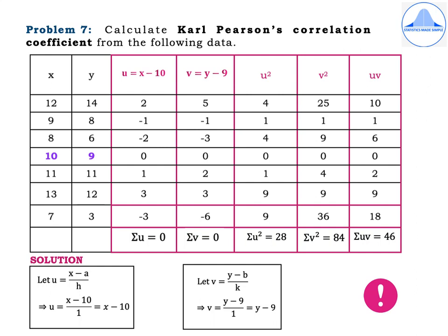Problem 7: Calculate Carl Pearson's correlation coefficient from the following data. The x values are 12, 9, 8, 10, 11, 13, and 7. The y values are 14, 8, 6, 9, 11, 12, and 3. We will find Carl Pearson's correlation coefficient using the change of origin and change of scale method. The middlemost x value is 10 and the middlemost y value is 9, highlighted in purple — these are the values of a and b respectively.